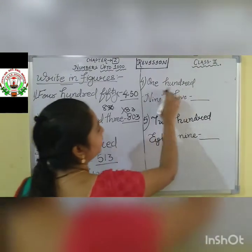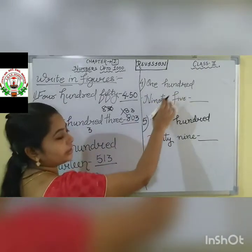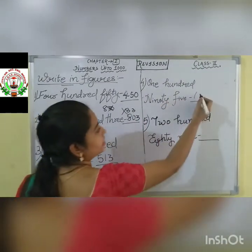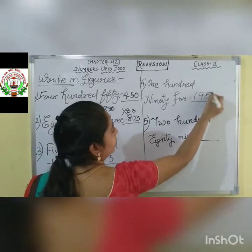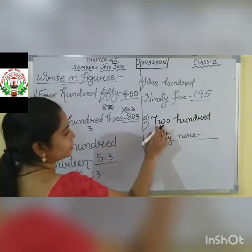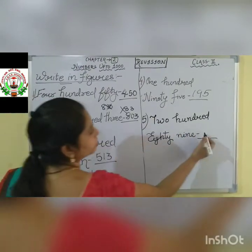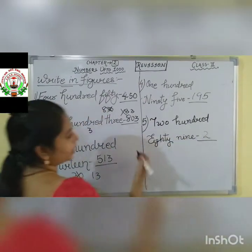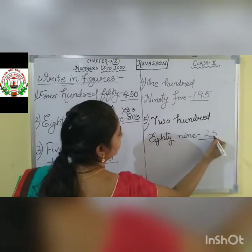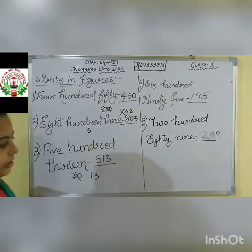Next question: one hundred and ninety-five. Write 1, then hundred. How are you writing 95? 9-5. Our answer is 195. Next: two hundred and eighty-nine. Write 2, then hundred. Then 89 — eighty is 8-0, and nine is 9. So 2 hundred 89 — we write 289 like this.